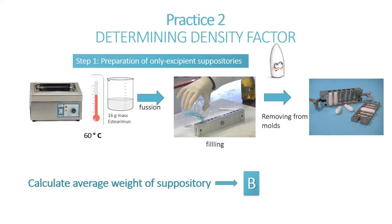First, we calculate the average weight of a pure excipient suppository. To do that, we weigh around 16 grams of massa esterium and melt it in the bath previously heated to 60 degrees. The molds are then lubricated with liquid paraffin and the molten excipient is poured over the alveoli, always overfilling. Once the mass is solidified, the excess is removed with a spatula. The suppositories obtained are extracted and weighed. This data is the average weight of excipient suppositories, which we have called B.